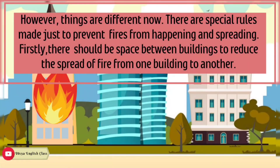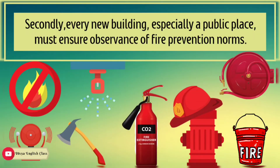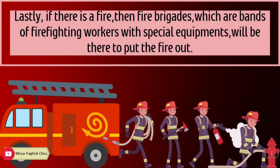However, things are different now. There are special rules made just to prevent fire from happening and spreading. Firstly, there should be space between buildings to reduce the spread of fire from one building to another. Secondly, every new building, especially a public place, must ensure observance of fire prevention norms. Lastly, if there is a fire, fire brigades — which are bands of firefighting workers with special equipment — will be there to put the fire out.